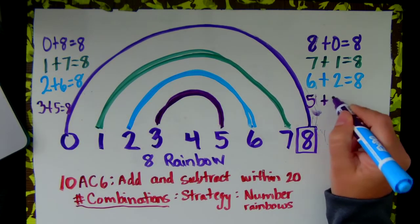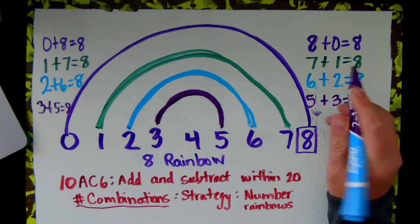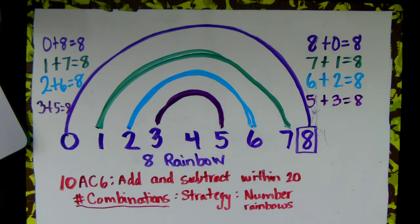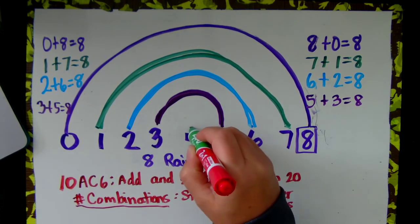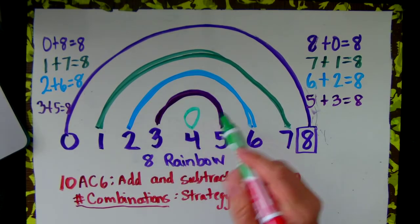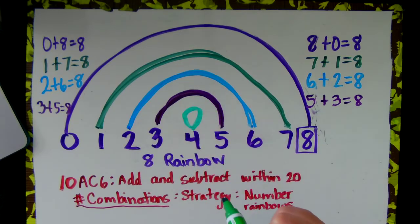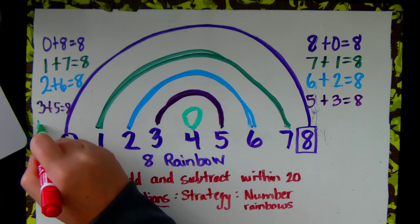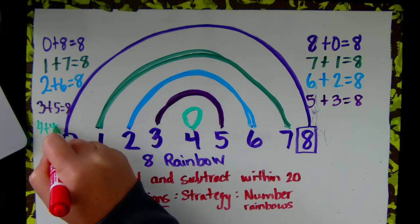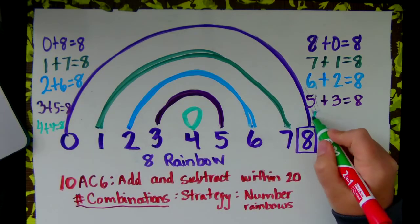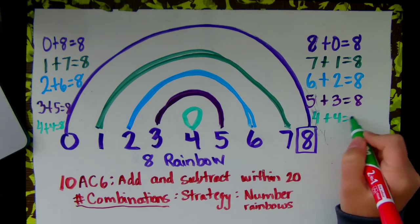And the last one is our addition double. 4 plus 4 make 8. 4 plus 4 equals 8.